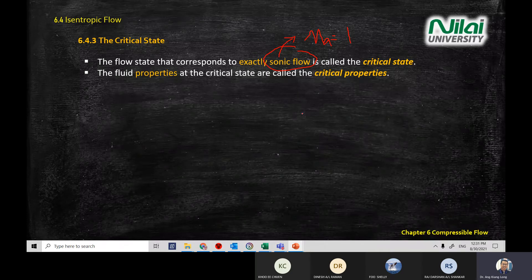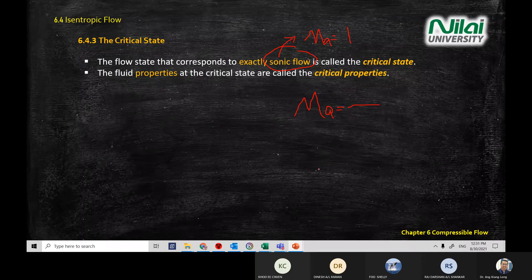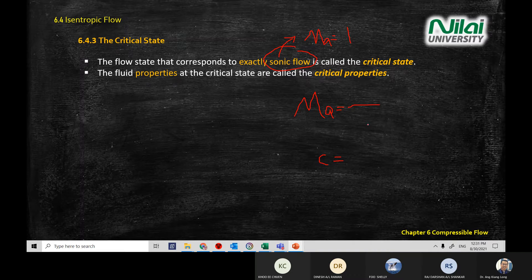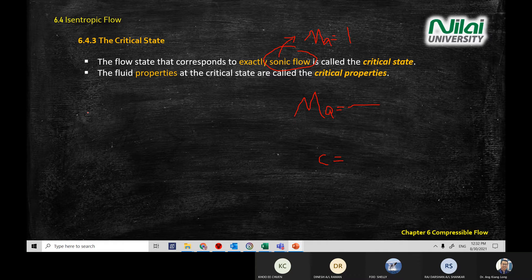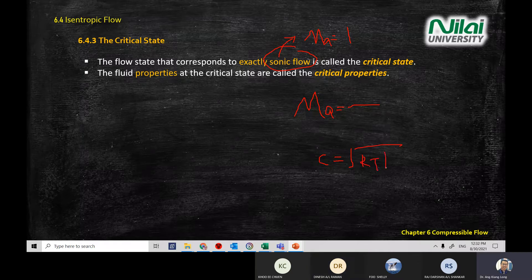Question for students: what is the equation of Mach number — how do you calculate it? What is the equation for speed of sound? Speed of sound equals square root of RTK. What is the equation for Mach number? Mach number equals velocity divided by speed of sound.